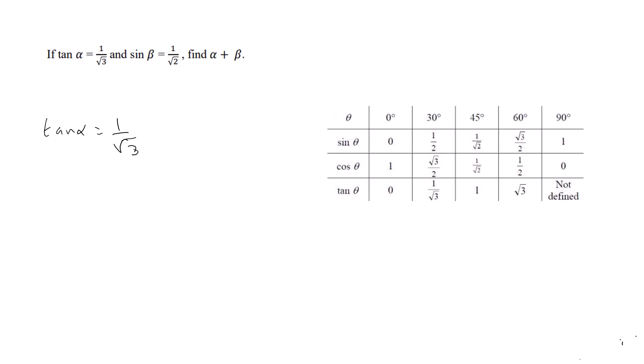This table will help you find out the value of α. Look at the values of tan α from 0 to 60 degrees. We can see that for tan 30°, the value is 1/√3. So we can write tan α = tan 30°.